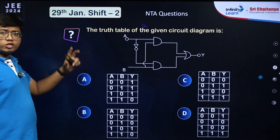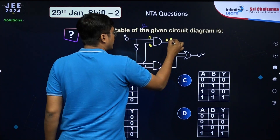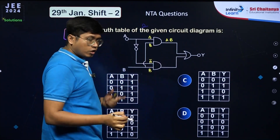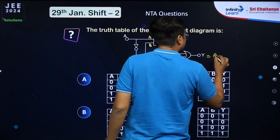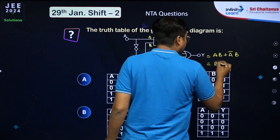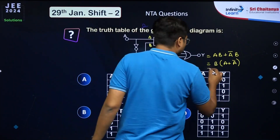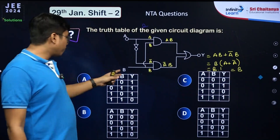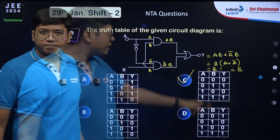The next question involves a truth table. Writing the Boolean expression: input A and B produce output AB; input B and Ā produce ĀB. Through an OR gate: Y = AB + ĀB = B(A + Ā) = B·1 = B. So Y equals B and A plays no role. The answer is option C.